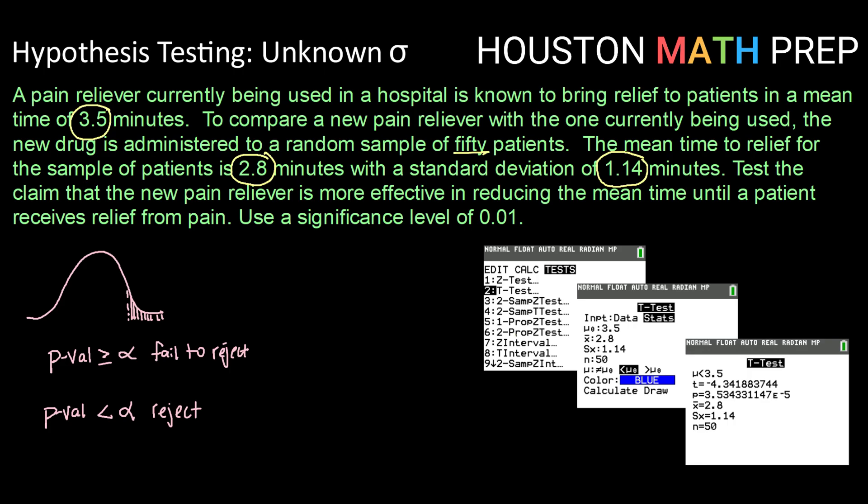Test the claim that the new pain reliever is more effective in reducing the mean time until a patient receives relief from pain. Use a significance level of 0.01.